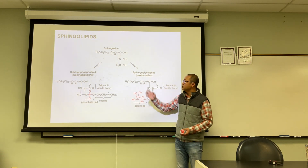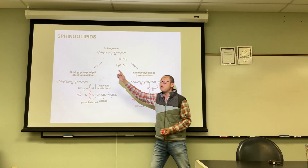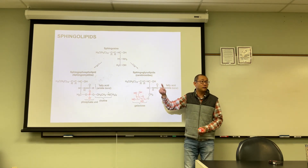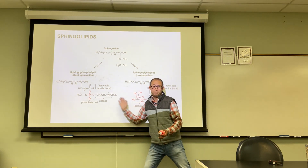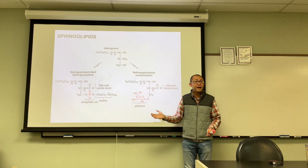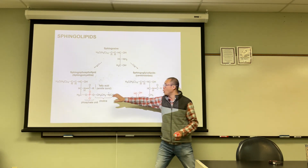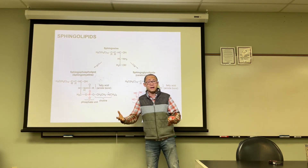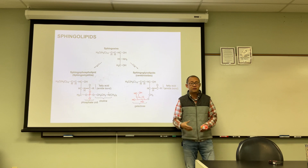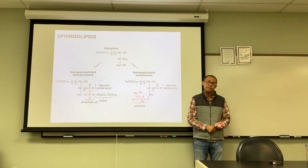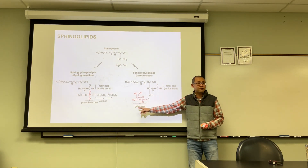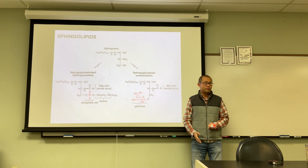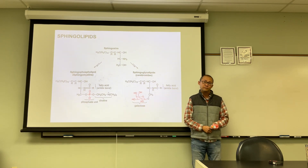These are all sphingolipids. Two types: sphingophospholipids (when you have a phosphate) and sphingoglycolipids (when you have a carbohydrate). Sphingomyelin is the main component of the myelin sheath in neural cells. When you have one carbohydrate such as galactose or glucose, you have a cerebroside.